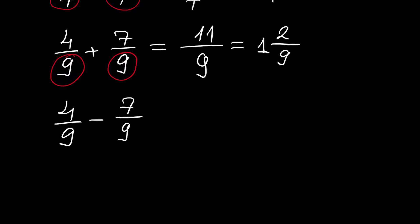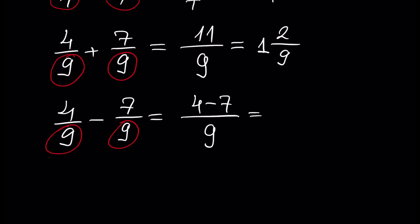For example, if we write 4 over 9 minus 7 over 9 — this is the same setup but with subtraction — the denominator stays the same and 4 minus 7 gives us minus 3, so we get minus 3 over 9. We divide numerator and denominator by 3 and get minus 1 over 3.